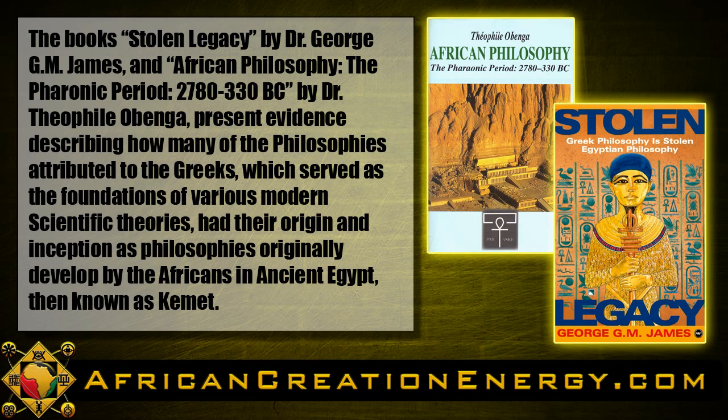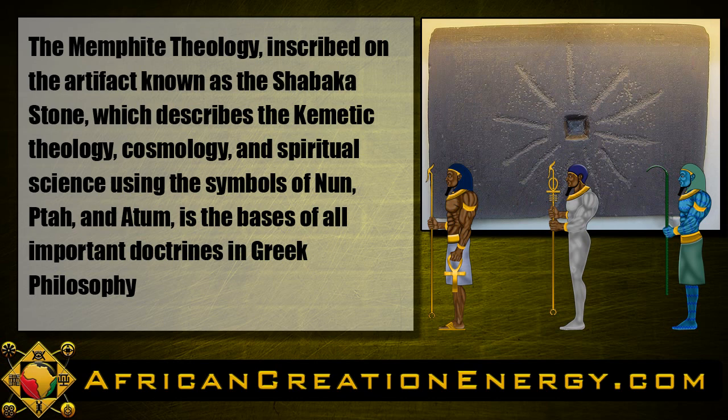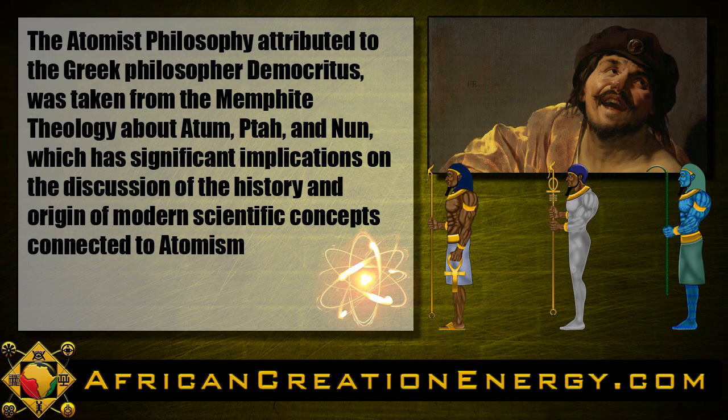In the books Stolen Legacy by George G.M. James and African Philosophy of the Pharaonic Period by Dr. Theophile Obinga, evidence is presented describing how many of the philosophies attributed to the Greeks, which served as the foundations of various scientific theories, had their origin and inception as philosophies originally developed by the Africans in ancient Egypt, then known as Kemet. More specifically, the Memphite Theology, inscribed on the artifact known as the Shabaka Stone, which describes the Kemetic theology, cosmology, and spiritual science using the symbols of Nun, Ptah, and Atum, is the basis of all important doctrines in Greek philosophy.